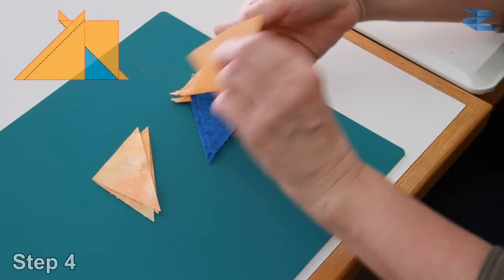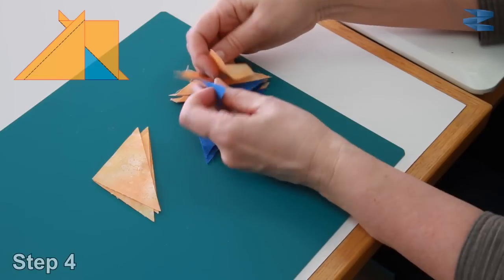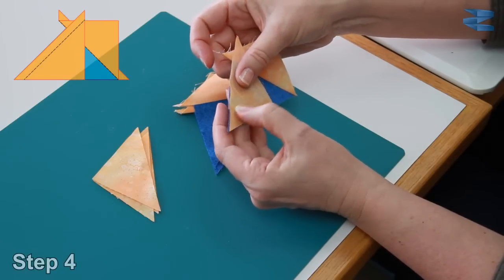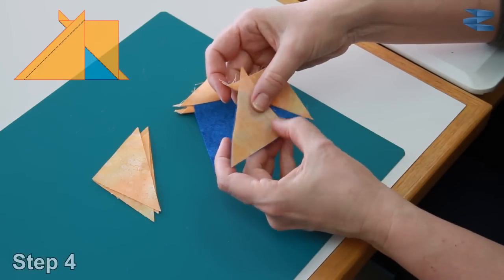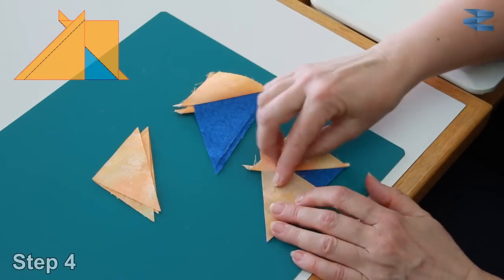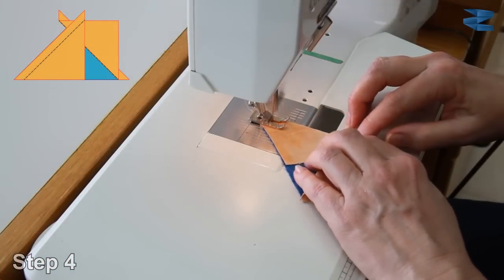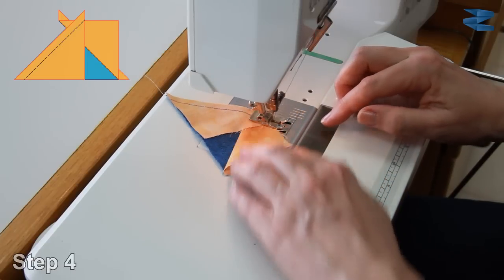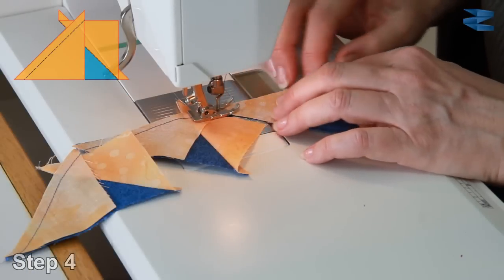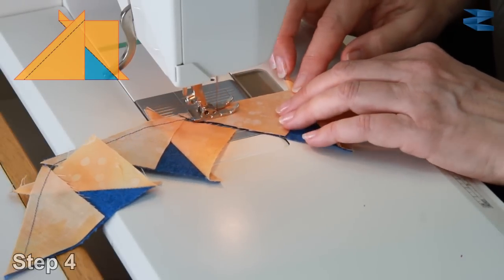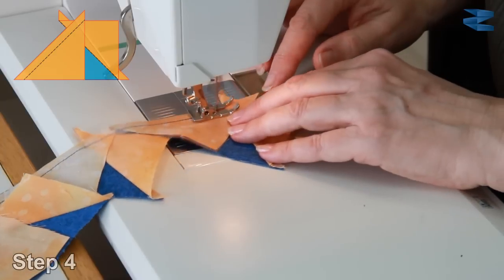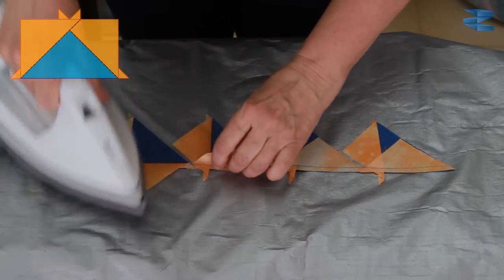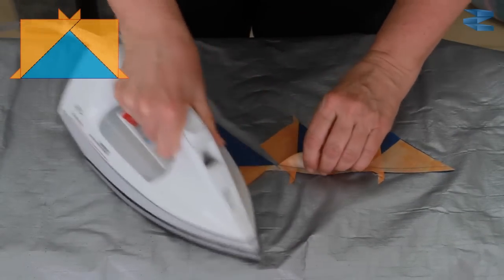Now we're going to sew the remaining triangles to the other side of the piece. So again you line up the corner and the bottom and the side. Again you press it generally away from the center blue one.